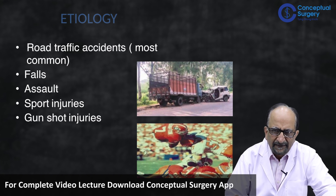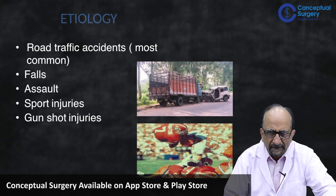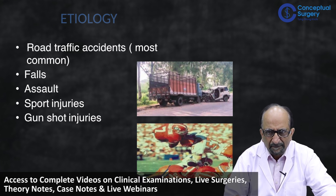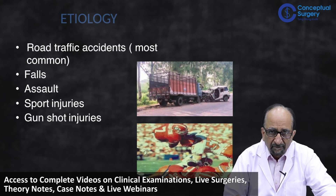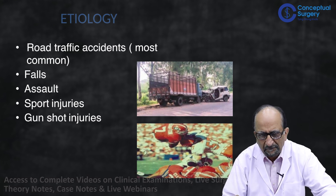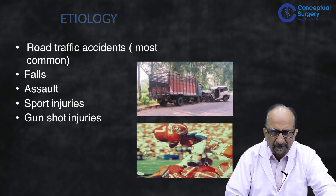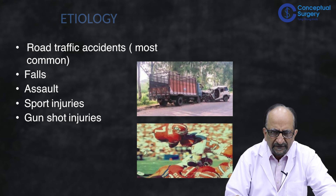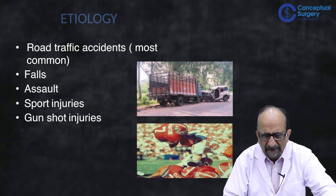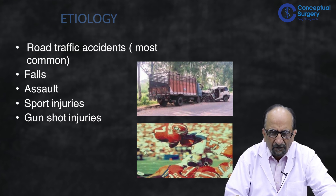Etiology: anything which causes a severe impact on the head or brain will result in brain or head injury. The commonest reasons in India and elsewhere in the world are road traffic accidents, falls from height — in India, also falls from trees, which may not happen in the Western world. Assaults are common everywhere. Sporting injuries, though not very common in India, are mostly associated with motor racing, boxing, and contact sports like football.